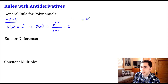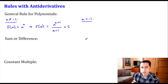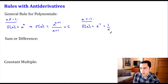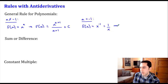The second case is when the exponent equals negative one. This is a special case because it doesn't follow the same pattern. We have f(x) equal to x to the negative one power, which we can also write as one over x. Since the derivative of the natural log of x equals one over x, my antiderivative capital F(x) equals the natural log of x.